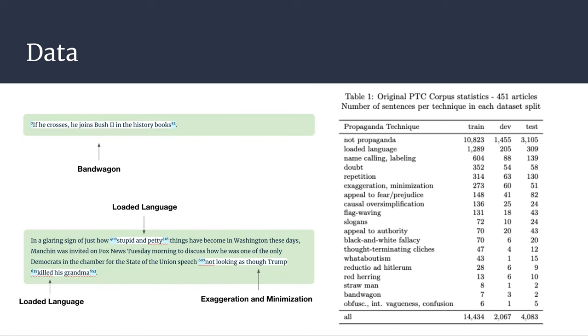Our dataset consists of 451 articles annotated at the sentence fragment level with zero or more propaganda techniques. There are 18 possible techniques and a total of 20,000 sentences.